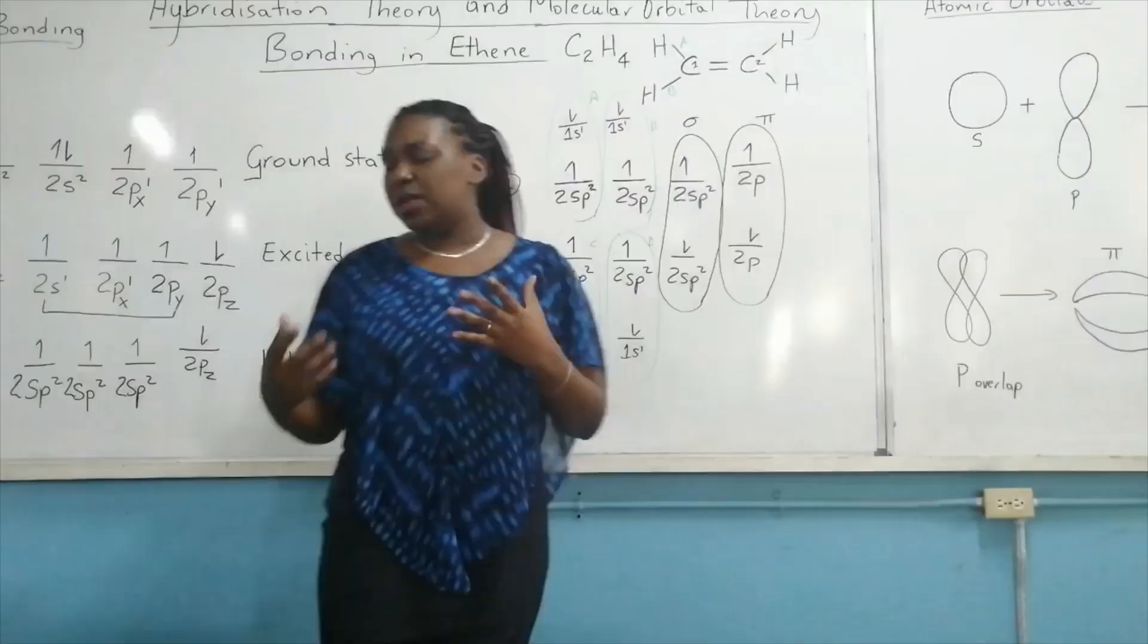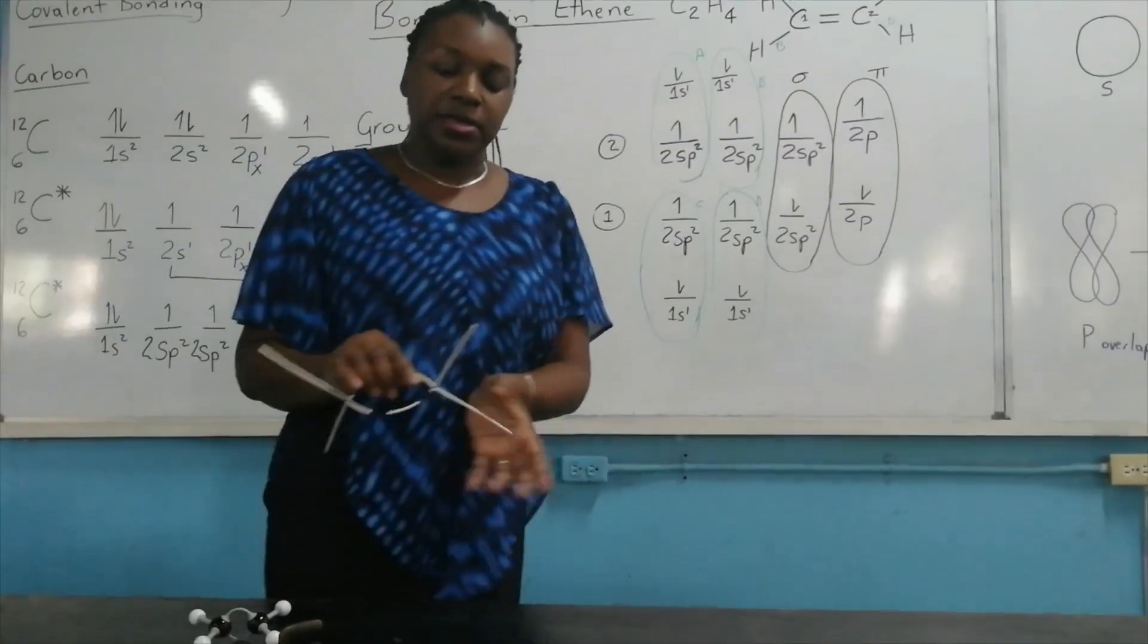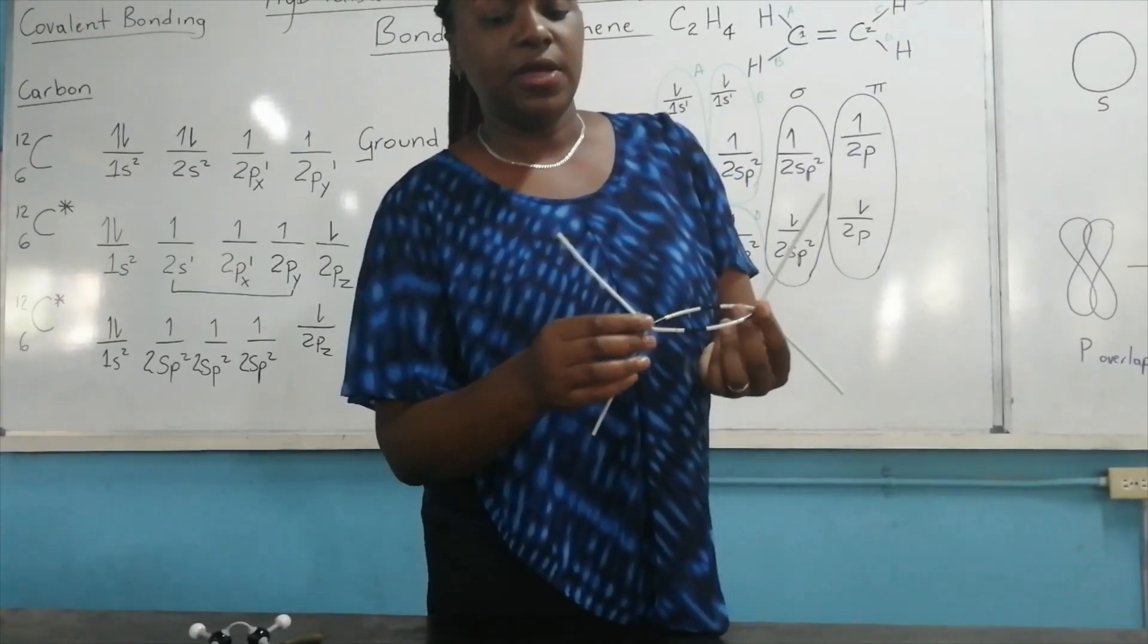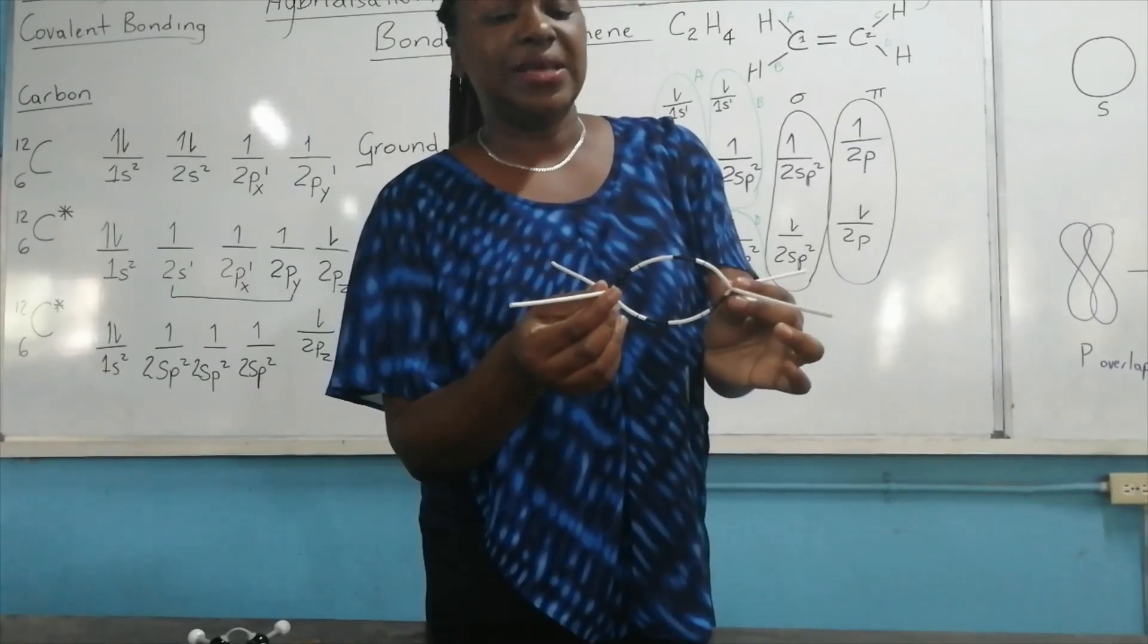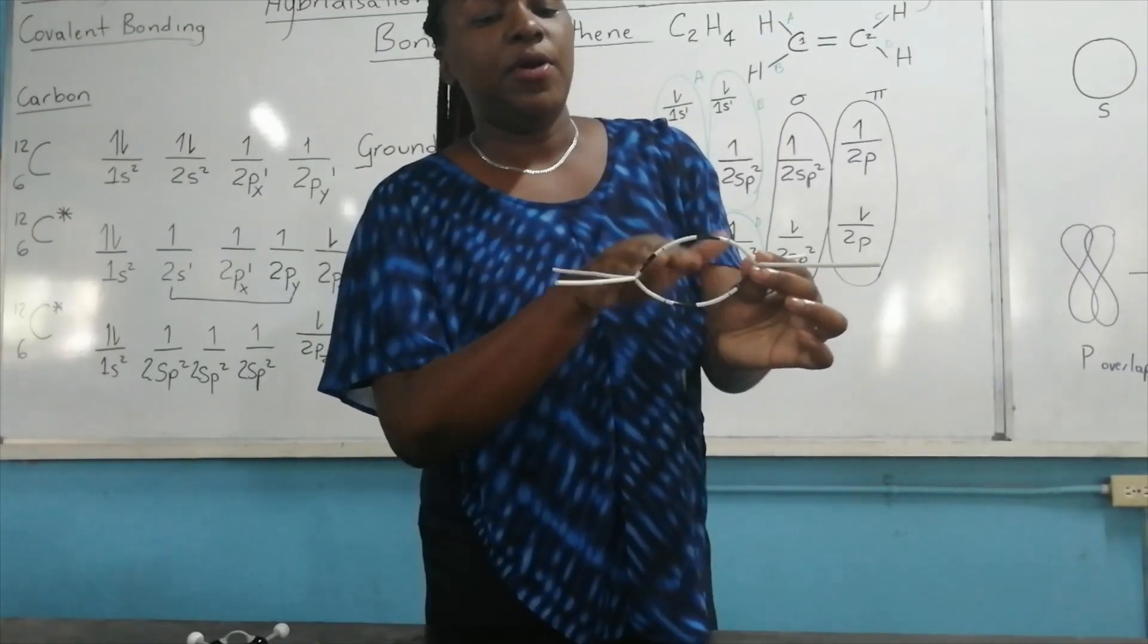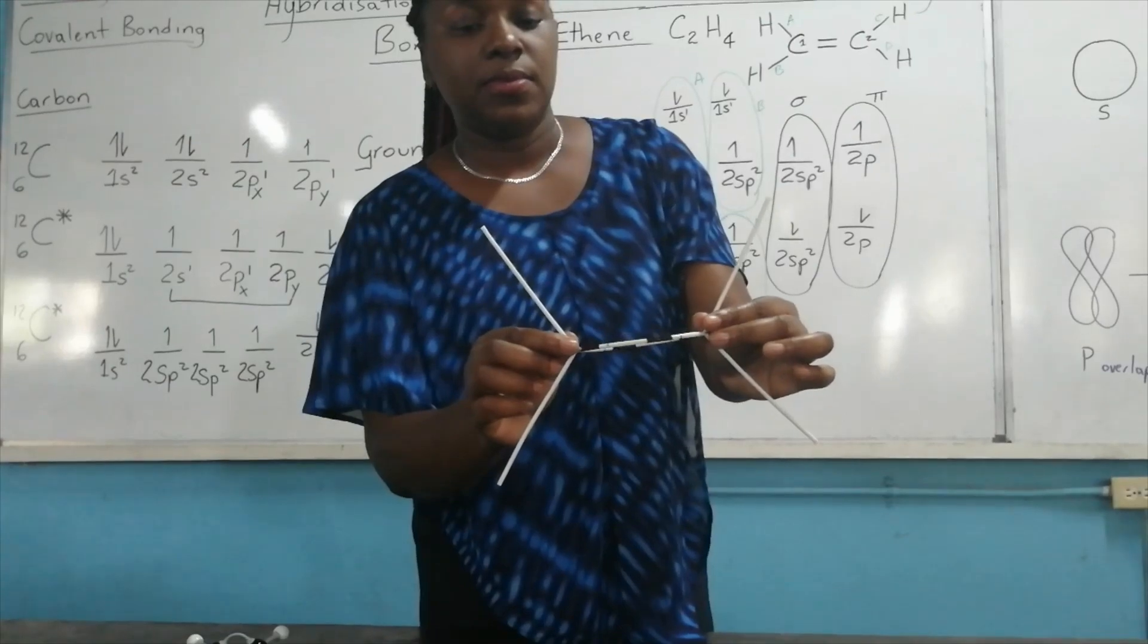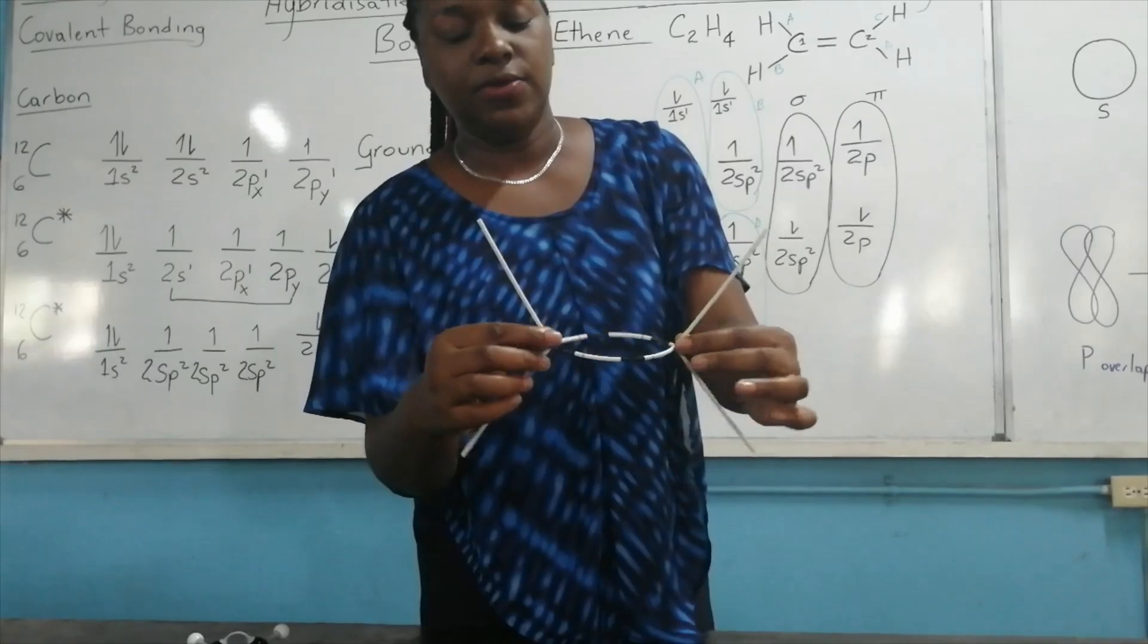In terms of what this molecule looks like, let me show you two models. So this model now, the carbon atom is here, another carbon atom is here, and then the hydrogens would be at the end of it. So you can see it's a planar molecule. If you hold it like this, then the pi bond lies above and below the plane. So it depends on the orientation that you hold it. So you can see it's a flat molecule.